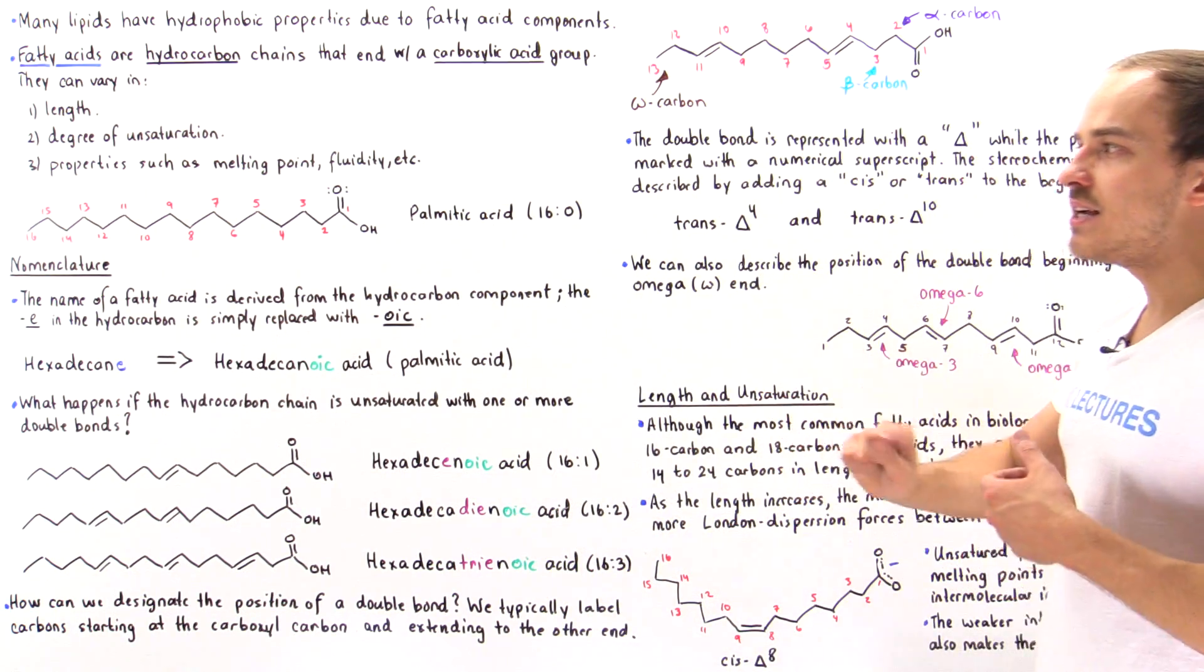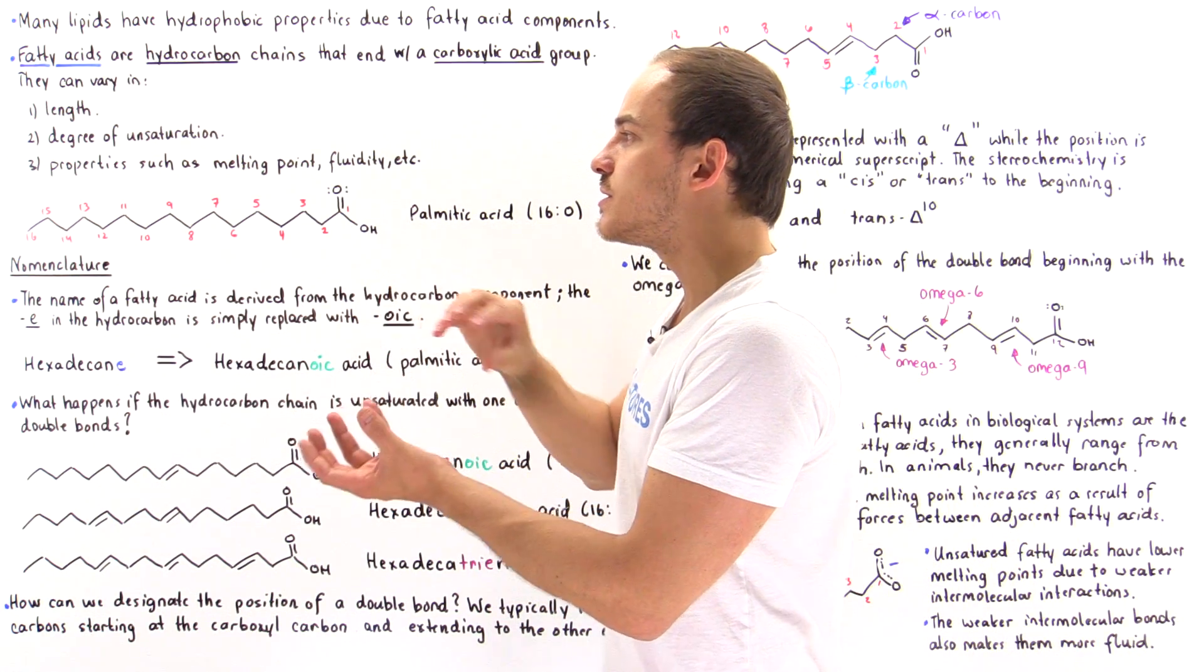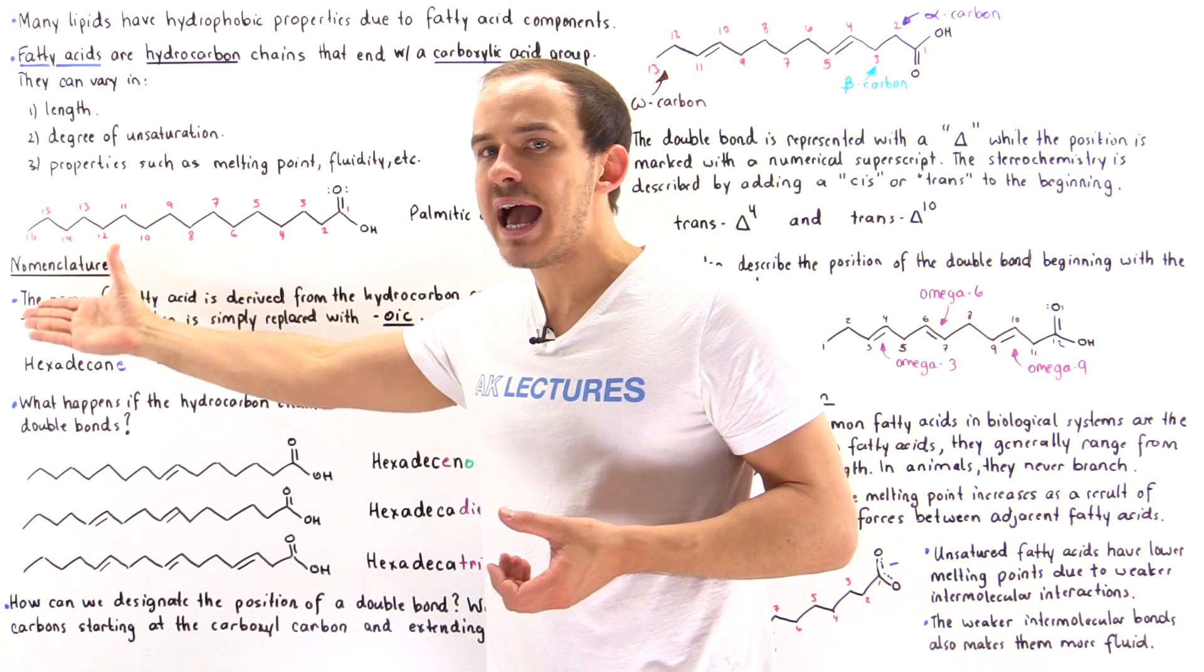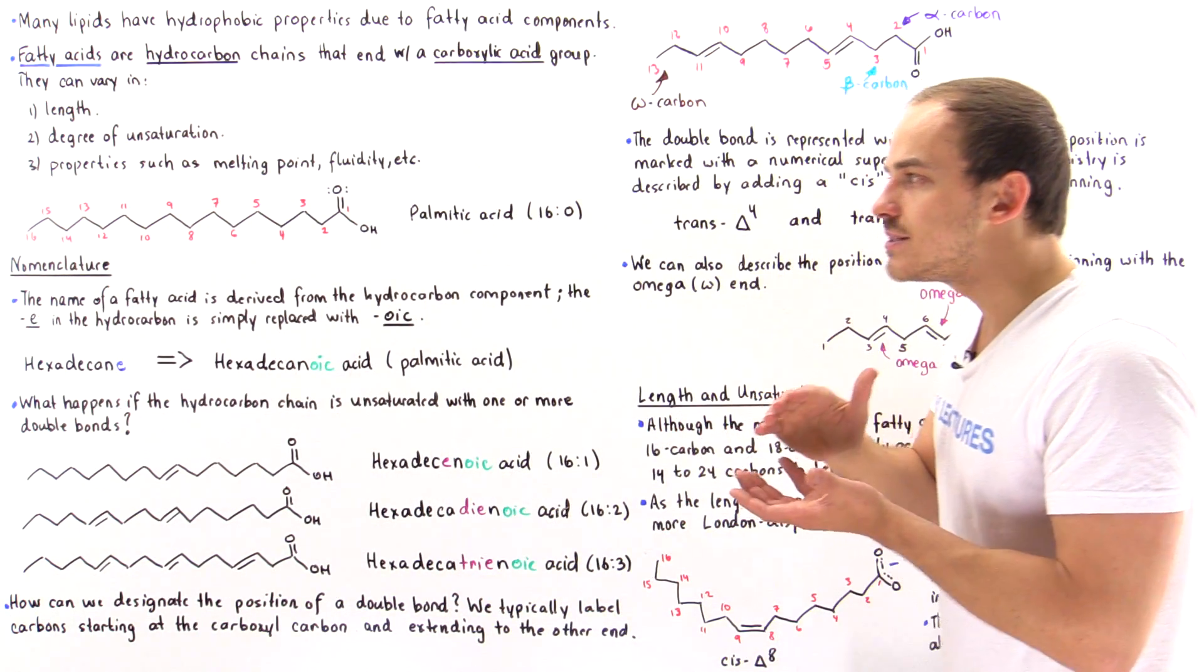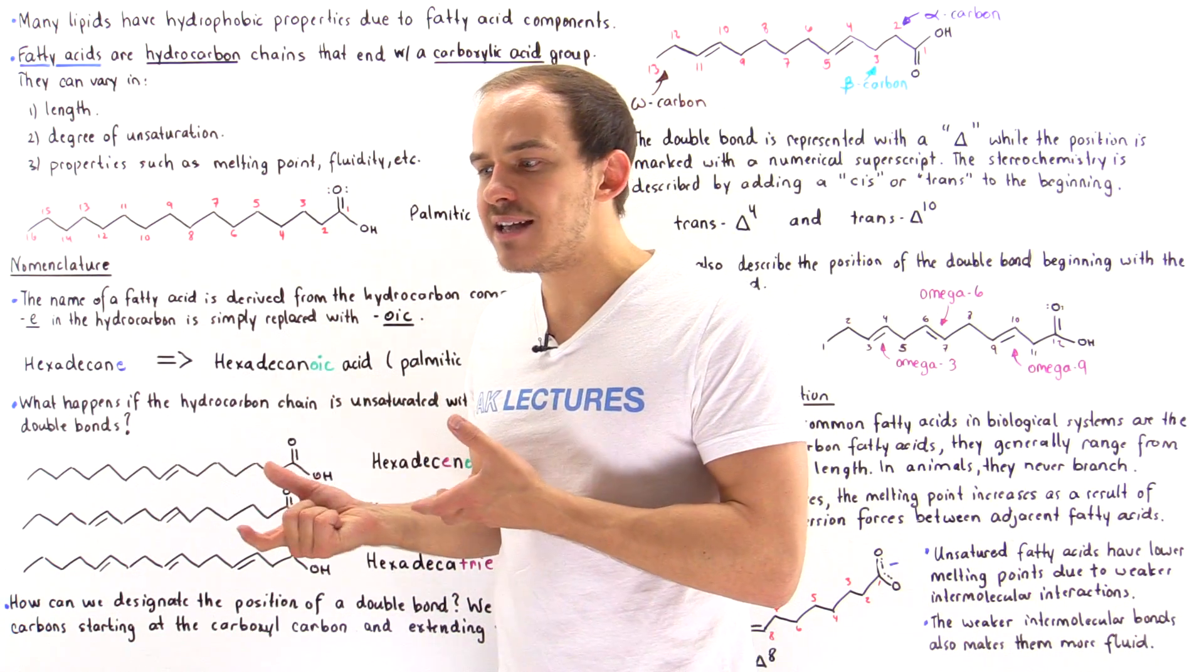And so essentially, because double bonds create these kinks, these deviations in the geometry of the fatty acid, what that does is it decreases the intermolecular attraction between the molecules, the fatty acids.